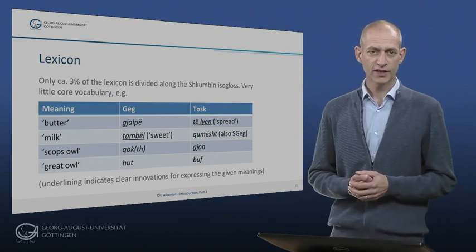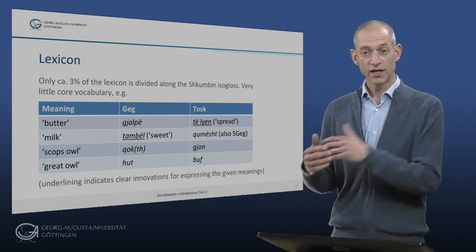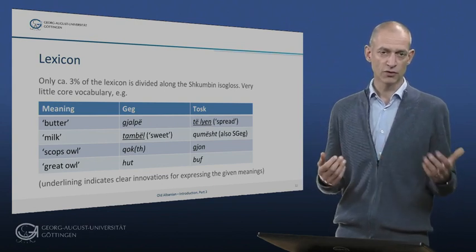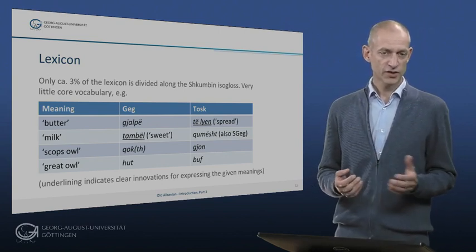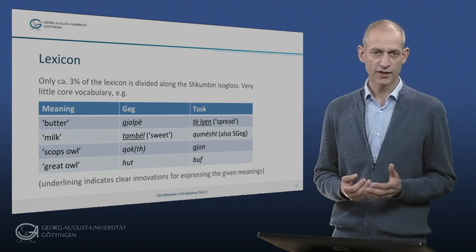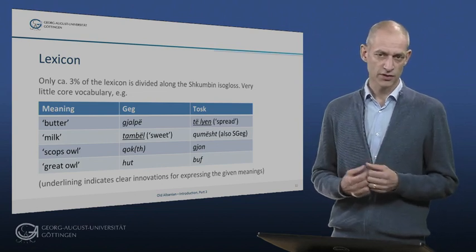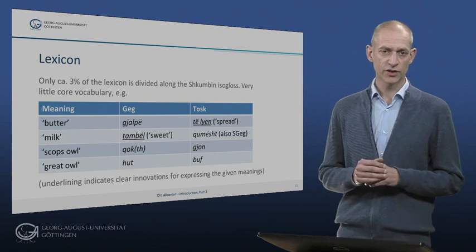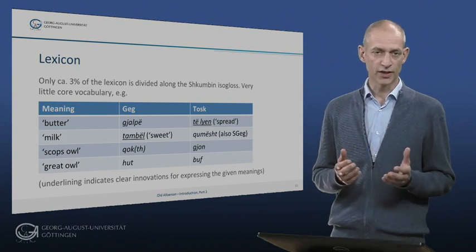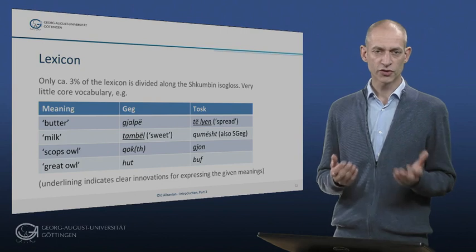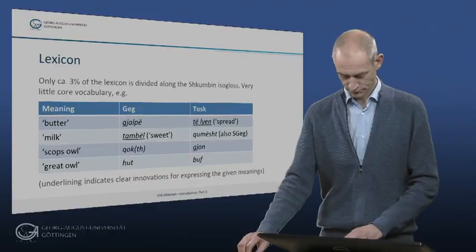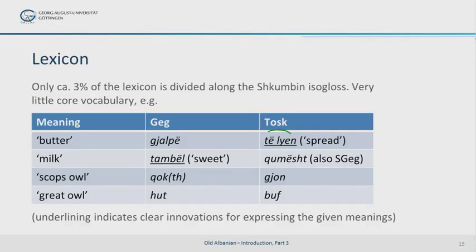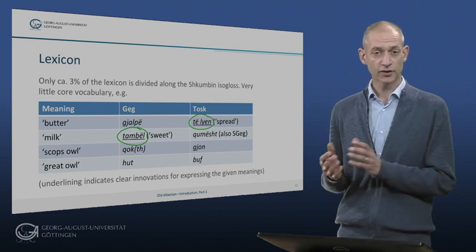Interestingly, it is not that easy to find clear lexical differences between all of GEG on the one hand and all of TOSK on the other, if we ignore more recent loanwords and derivatives which may have been formed or spread after the TOSK migrations to Greece and Italy. It has been stated that around three percent only of the lexicon is divided along the Shkumbin isogloss, but for the core vocabulary this number must even be lower. Here are four of the 400 words in the recent Albanian dialect atlas which differ between GEG and TOSK as a whole. The only terms that are really basic words — 'butter' and 'milk' — show a TOSK innovation for one word and a GEG innovation for the other, and even these two words are likely to have diverged only after the TOSK-GEG split.